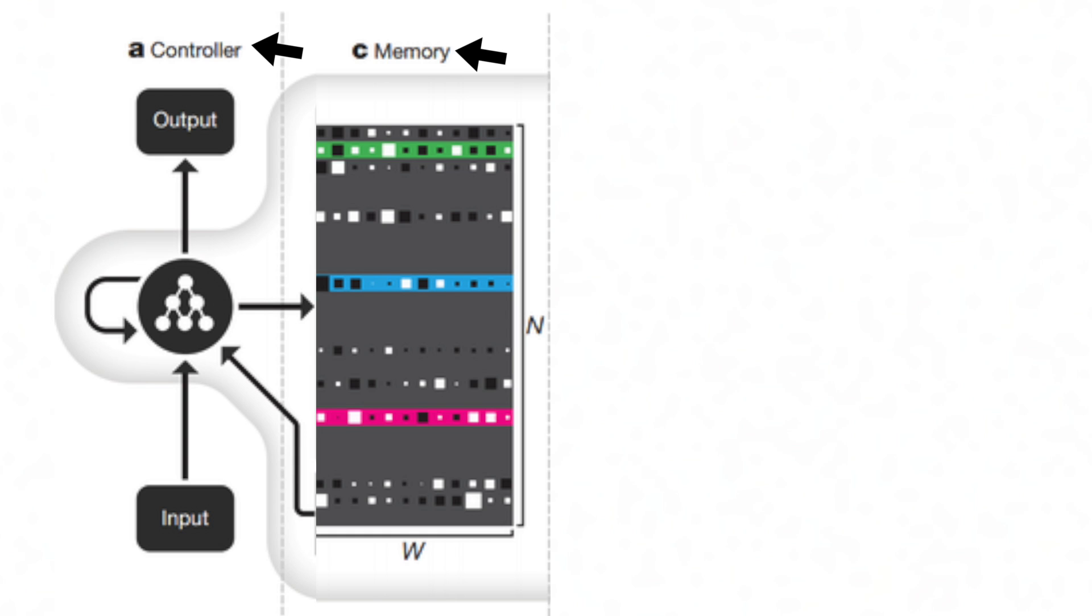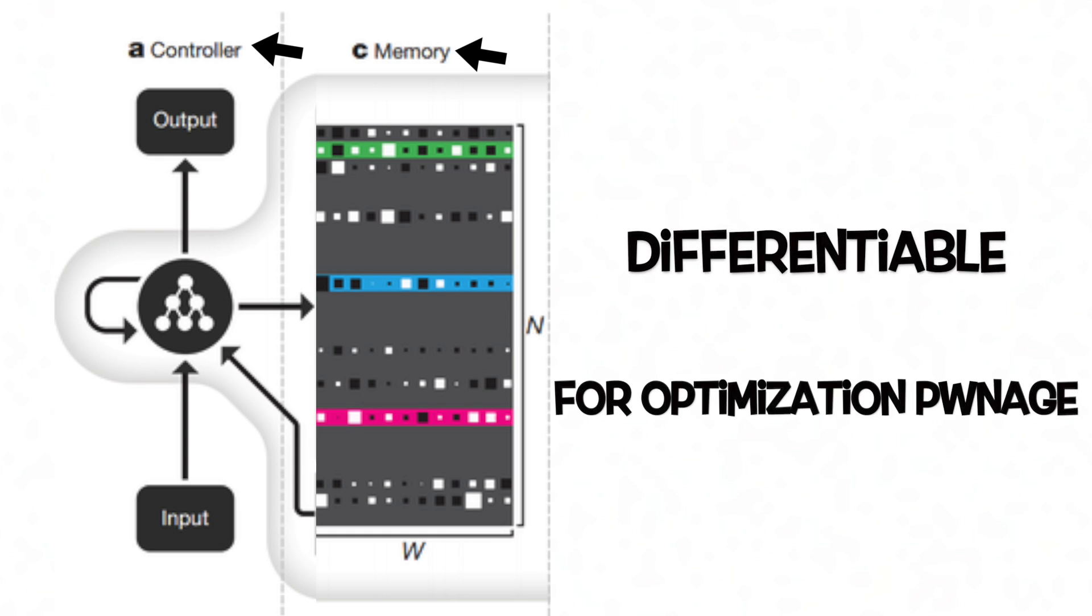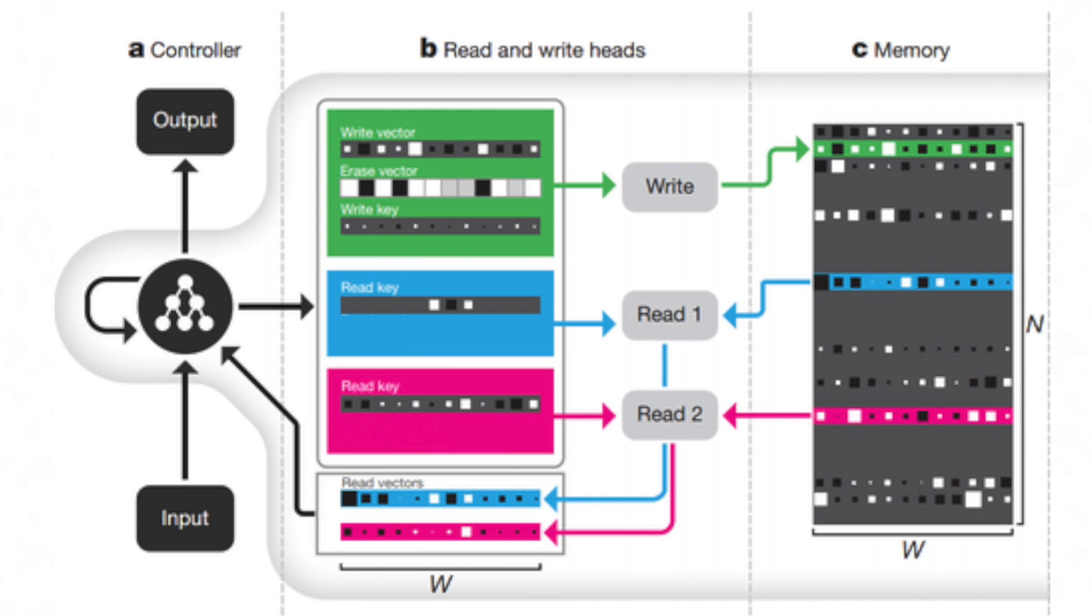We need all the components, including the memory store, to be differentiable so that we can incrementally update their values during training. To achieve this, they added an attention mechanism so that each read and write operation interacts to a tunable degree with all the elements in memory rather than addressing a single element like a normal Turing machine would.